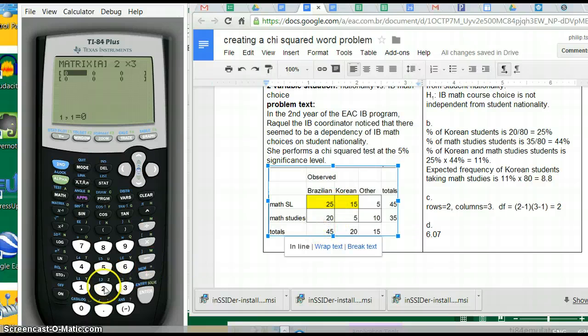We're going to put in these data. 25 and 20. Then we go to the next column and put 15 and 5. Then we go to the next column and put 5 and 10.